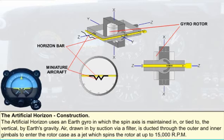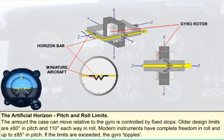After driving the rotor, the air passes into the instrument case through slots at the base of the rotor housing. The amount the case can move relative to the gyro is controlled by fixed stops. With older designs, typical limits are plus or minus 60 degrees in pitch and 110 degrees each way in roll. In modern instruments there is complete freedom in roll and up to plus or minus 85 degrees in pitch. If the limits are exceeded, the gyro topples, giving violent and erratic movements of the horizon bar.